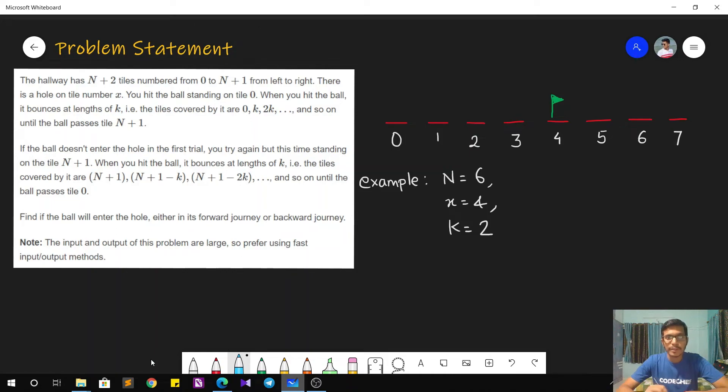The problem statement goes as follows. We are given the value n and also there are n plus 2 tiles numbered from 0 to n plus 1. As you can see, I have taken an example where n equals 6. So tiles numbering from 0 to 7 are present from left to right. Now it is also given that there is a hole on tile number x. In my case x equals 4, so I have marked it with a special flag. There is a hole on this tile number 4.